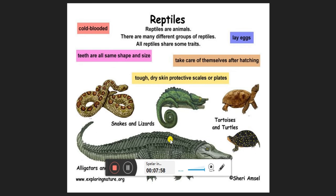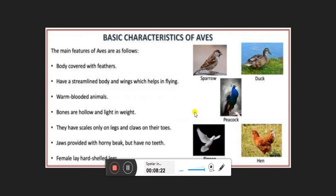Reptiles breathe with lungs. They have a three-chambered heart. Their eggs are leathery with a yolk present inside. Examples include snakes, lizards, tortoises, and crocodiles.